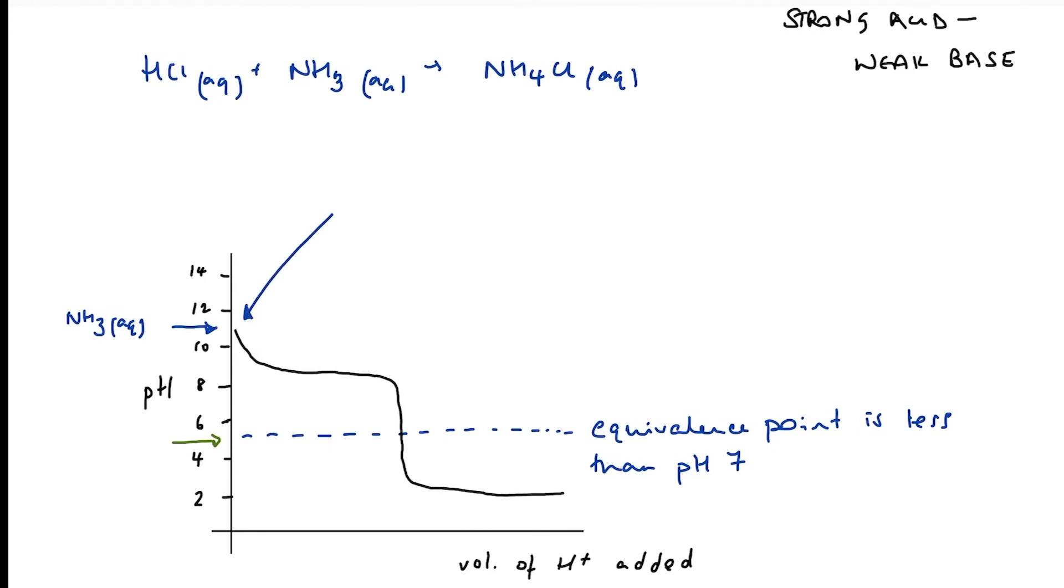So once again, this initial solution of ammonia contains both the weak base and its conjugate acid. So what we have in our conical flask is another buffer system. So NH4+ aqueous plus hydroxide ions.